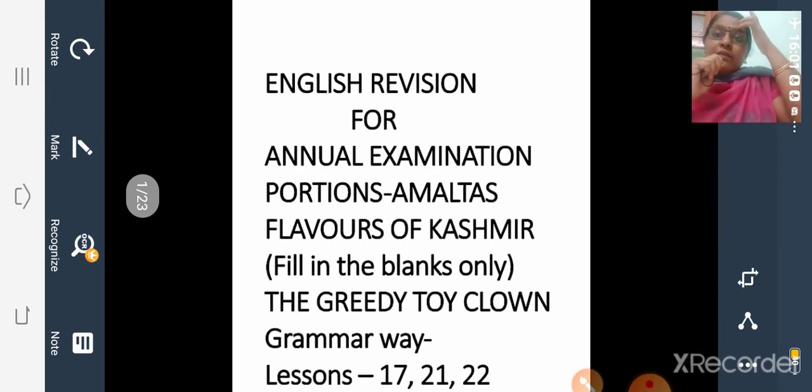I have already given your portions from reader three lessons and grammar three lessons. So reader you have to study the poem Amaltas, The Flavors of Kashmir, and The Greedy Toy Clown. From grammar lessons, lessons 17, 21 and 22.